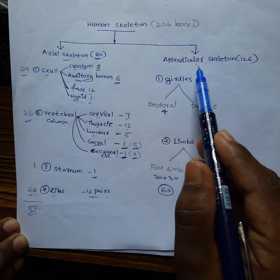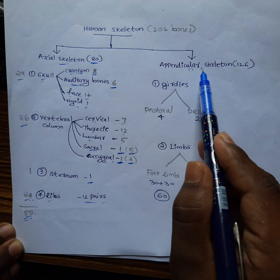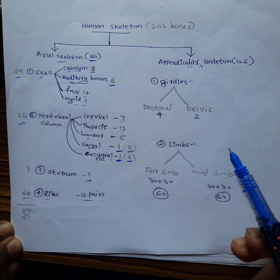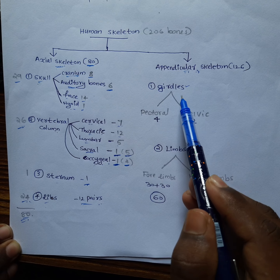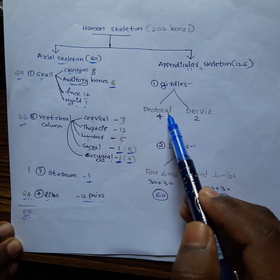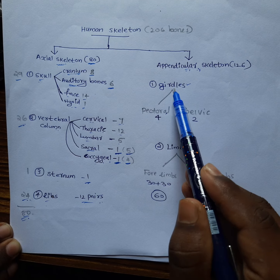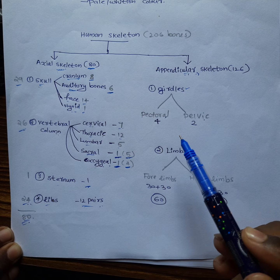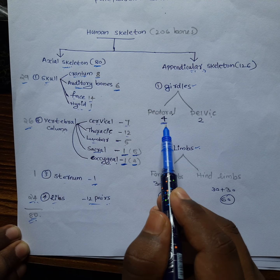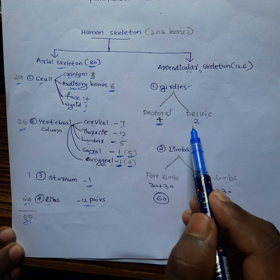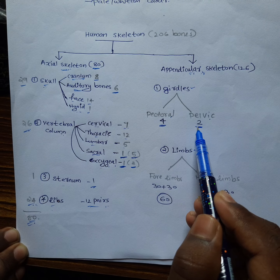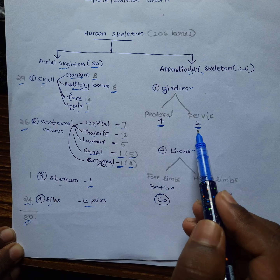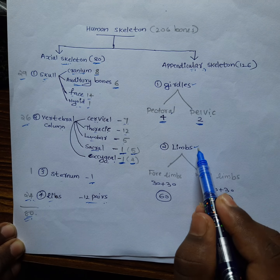Next, I'm taking the appendicular skeleton. The appendicular skeleton includes girdles and limbs. These girdles are of two types: one is the upper pectoral girdle and another one is the pelvic girdle found on the lower side. There will be a total of four bones in the pectoral girdle and two bones in the pelvic girdle, so 4 plus 2 equals 6.